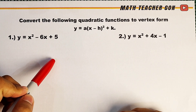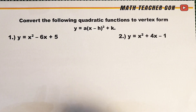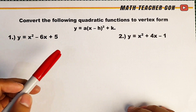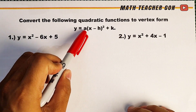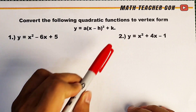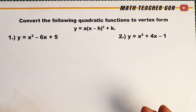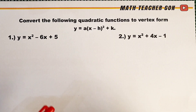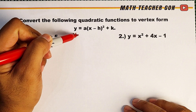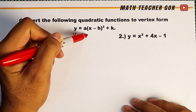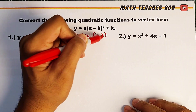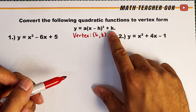What we have for today's video are quadratic functions that are to be converted into the vertex form y is equal to a times x minus h squared plus k. One of the purposes of converting a function to its vertex form is for us to easily know our vertex. Remember that the vertex of a quadratic function is denoted as h and k.